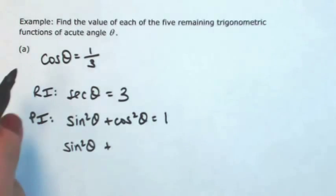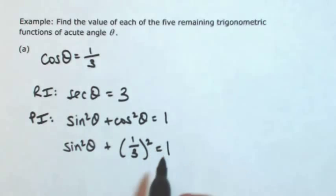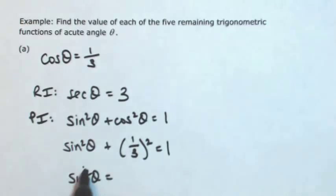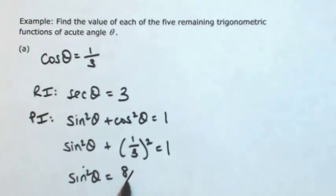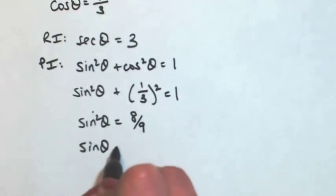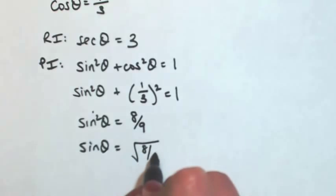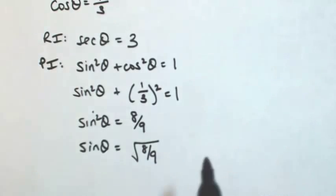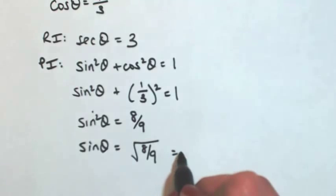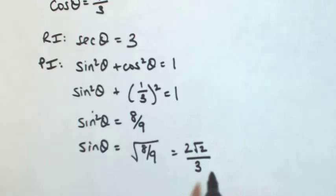Replacing cosine with one-third and squaring that, and solving for sine squared theta: one-third squared is one-ninth, so one minus one-ninth is eight-ninths. Sine of theta is technically plus or minus, but remember this is an acute angle, so it's going to be positive. Taking the square root of top and bottom, I get square root of eight, which is two square root of two, over square root of nine, which is three.